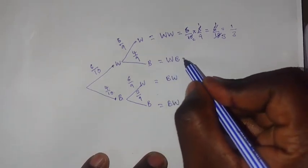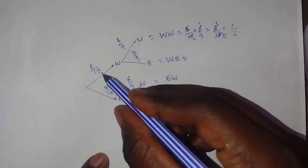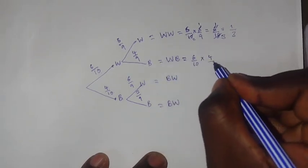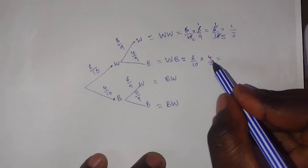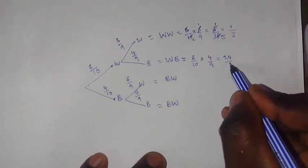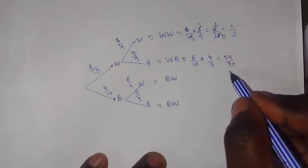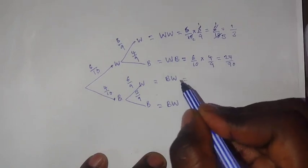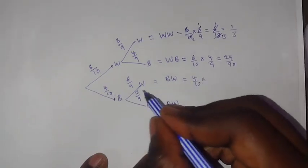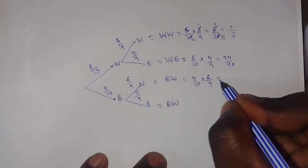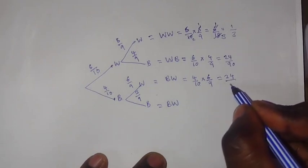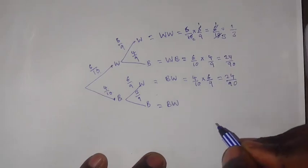For white-black, we multiply 6 over 10 times 4 over 9. That gives us 24 over 90. For black-white, we multiply 4 over 10 times 6 over 9. Again, 4 times 6 is 24, and 10 times 9 is 90, giving us 24 over 90. I hope we are moving together here.